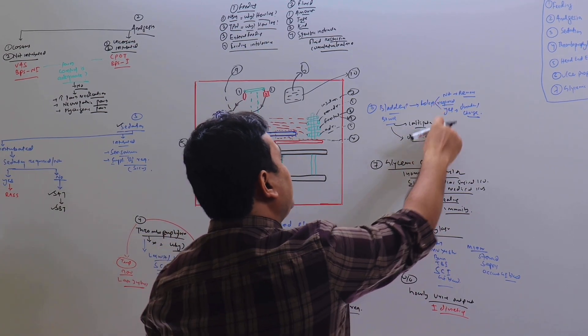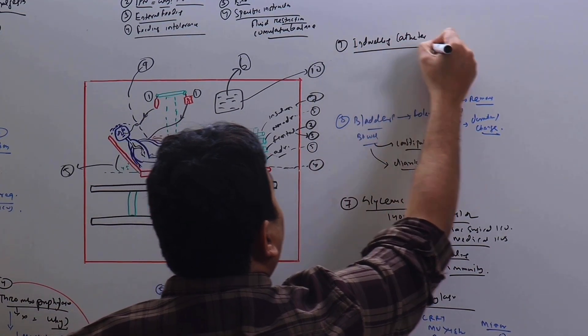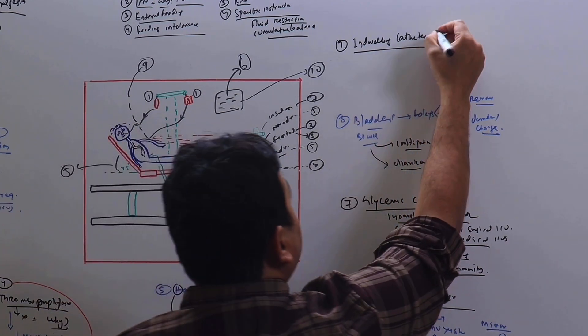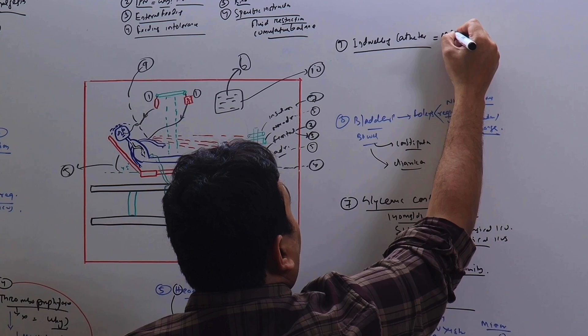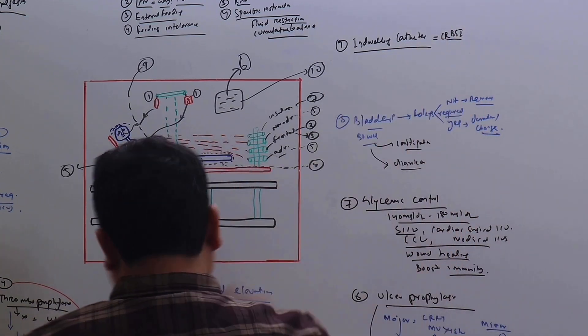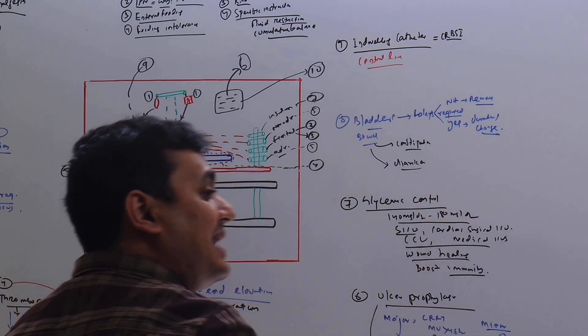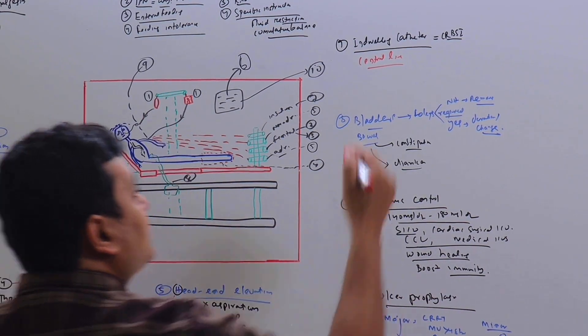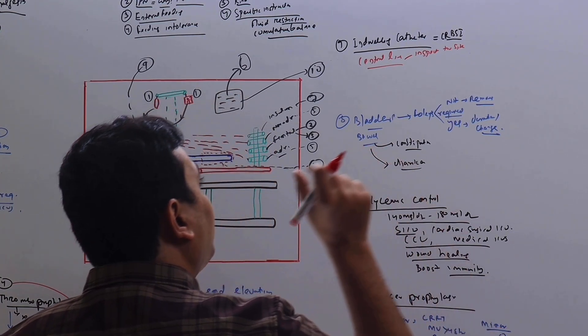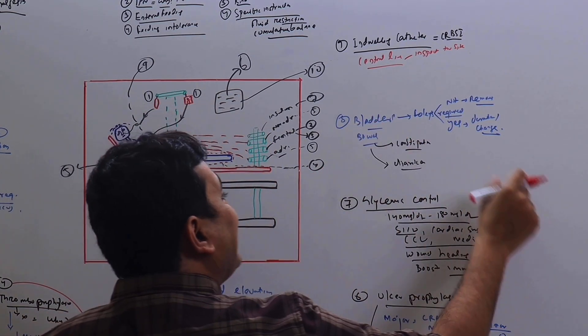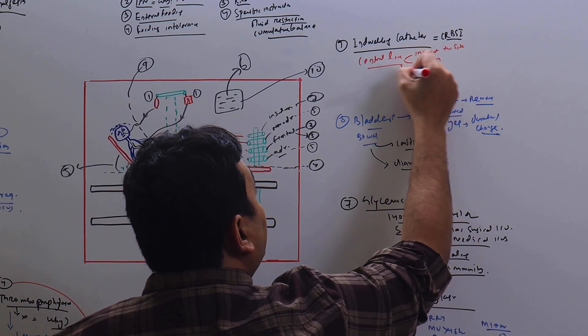Number nine is indwelling catheter. In the indwelling catheter, we have already discussed about the Foley's. Here especially I want all of you to focus on the CRBSI. So if the patient is having a catheter—central line—central line can be IJ line, subclavian line, or an arterial line. All these are central lines. In your every round in the ICU, you need to inspect the site for inflammation or markers of infection like redness, swelling, pus. You need to write the duration.